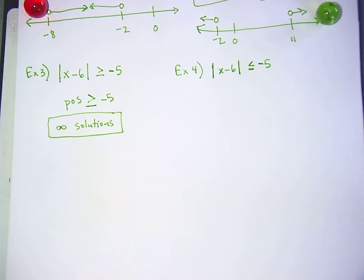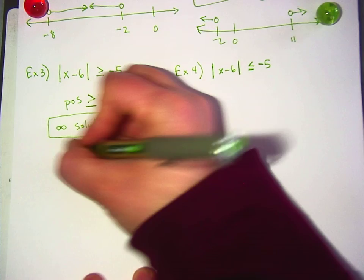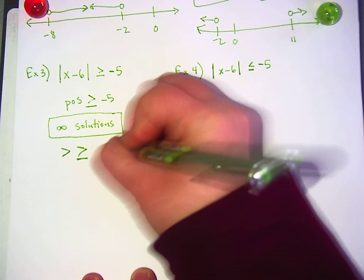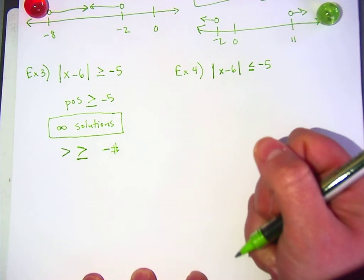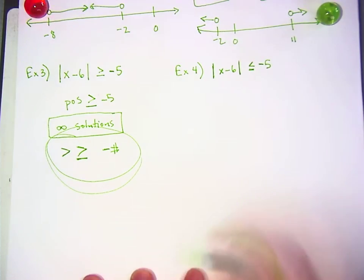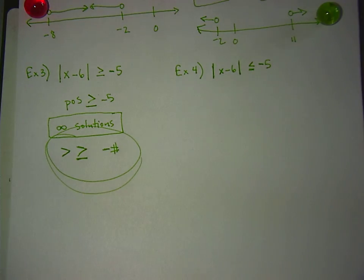So what do you have to watch for? To know it's an infinite solution, yeah? Negative than or greater than. Right. So it has to be a greater than sign, or greater than or equal to, and it has to be a negative number on the other side. These are the things to watch for. And remember, this only works with an absolute value problem.